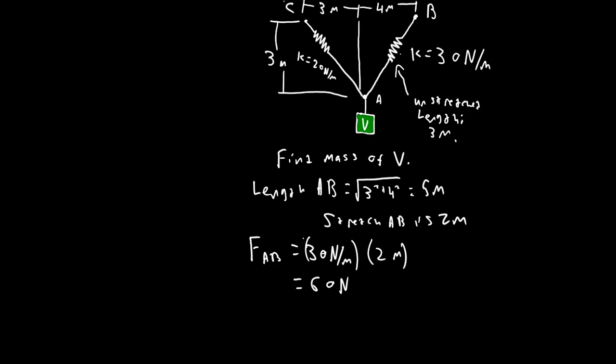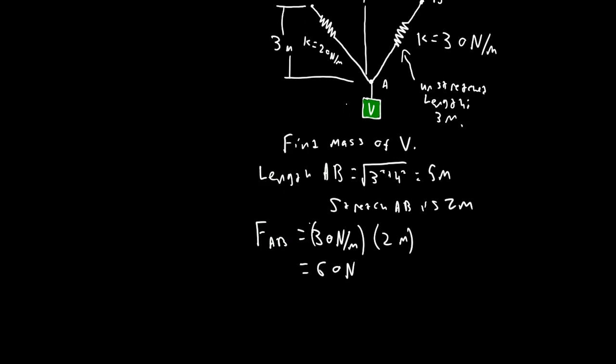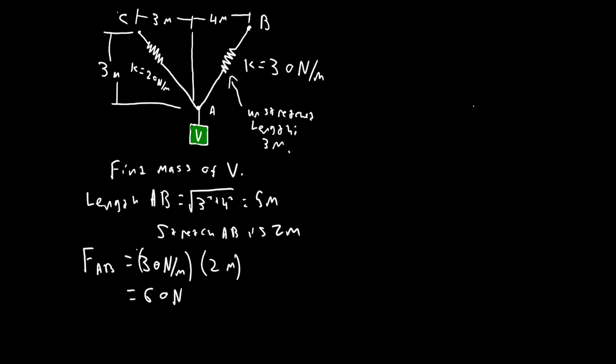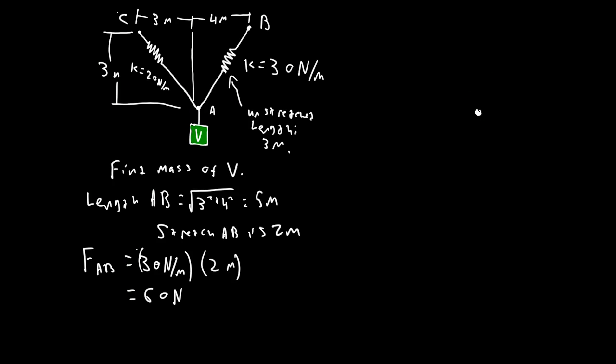So we get that the force in this spring is 60 newtons. So let's draw our free body diagram over here, just because I want to keep that in view. So we've got this force here, 60 newtons. We've got this, call it FV for force veggies.